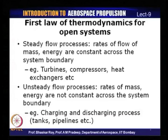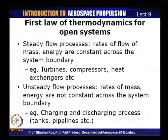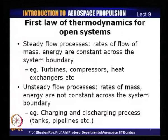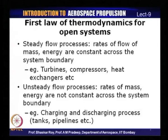A process could also be unsteady if the rates of mass and energy are not constant across the system boundaries. Some examples are charging and discharging processes — like charging a tank with compressed air or compressed gas from a pipeline — which is basically an unsteady flow process because the rates of mass or energy are not constant across the system boundaries.